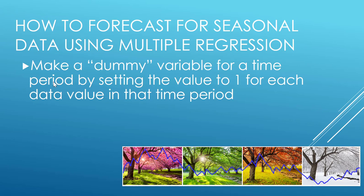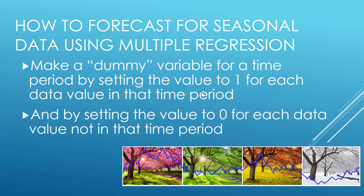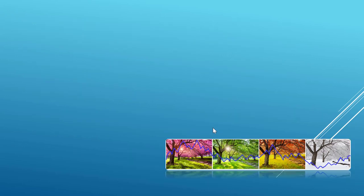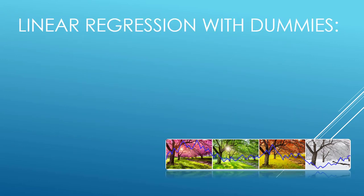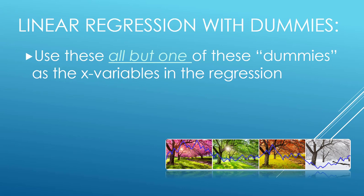By time period I mean if you had monthly data for each month, and if you had quarterly data for each quarter. We're going to make dummy variables by setting the value to one for each data value that's in that time period and setting the value to zero for each data value that's not in that time period.